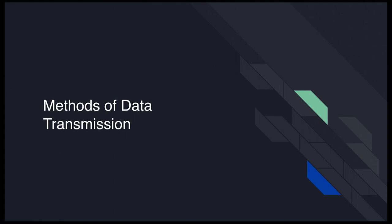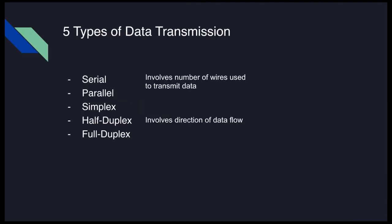Those data packets apply more to networks and the internet. Now we're going to talk about basic data transmission between any two devices. There are five types of data transmission. The first two — serial and parallel — involve the number of wires used. The last three — simplex, half-duplex, and full-duplex — involve the direction of data flow.